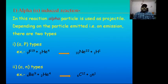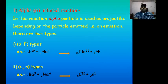Another one is alpha-neutron type induced reaction. In this type, alpha particle acts as projectile while neutron acts as emission or ejectile. Example: Beryllium-9 plus alpha particle gives Carbon-12 and a neutron. Here alpha particle acts as projectile and neutron as ejectile.